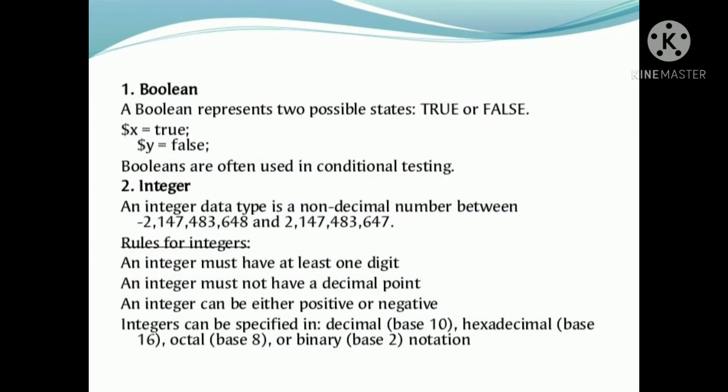First, boolean. A boolean represents two possible states: true or false. We can declare variables $x and $y as boolean values.